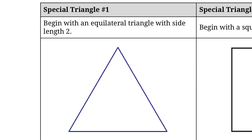These special angles come from our special triangles. If we have an equilateral triangle with side length 2, so that means each side is 2, but that also means that each angle is actually 60 degrees. And if we split this triangle directly down the middle getting two right triangles, this is our special triangle.